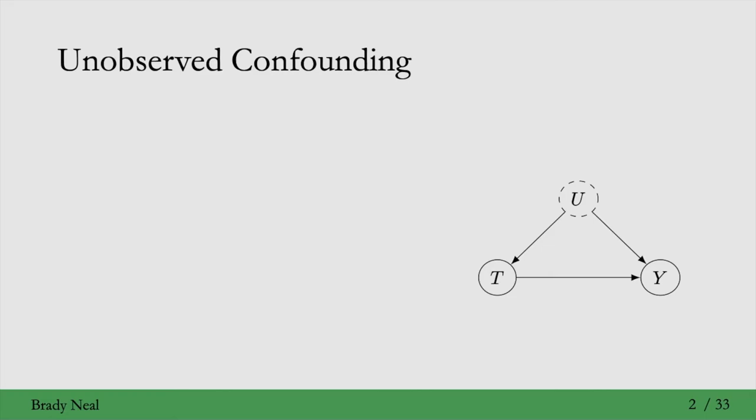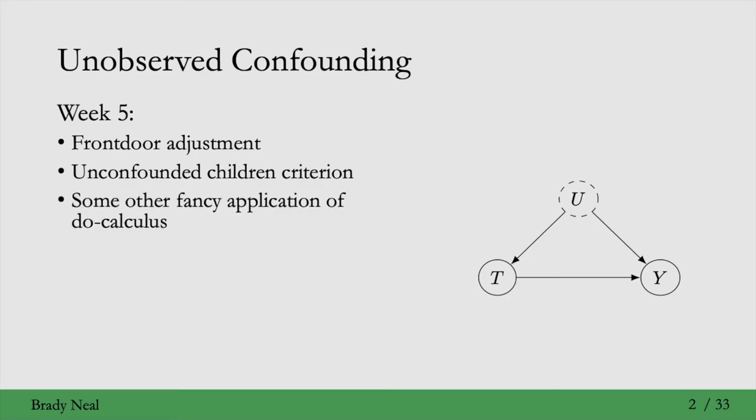So we need to know what to do in that setting, where we have unobserved confounding, and we've seen a few different techniques for what we can do. For example, in week 5, we saw that if we have the frontdoor criterion satisfied, then we can use the frontdoor adjustment. Similarly, we saw that we have identifiability if we have the unconfounded children criterion satisfied. The backdoor criterion and the frontdoor criterion are special cases of the unconfounded children criterion, so it's more general. And this unconfounded children criterion isn't a necessary condition, so we can also get identifiability via some fancy application of the rules of do calculus, since we saw that any identifiable causal estimate can be identified with a sequence of applications of the rules of do calculus. And that's all stuff we saw in week 5 for identifying a specific point for the causal effect.